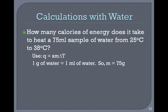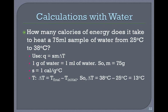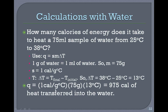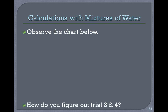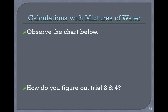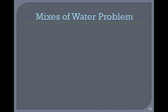How many calories of energy does it take to heat a 75 mL sample of water from 25°C to 38°C? Using Q-SMAT: one gram of water equals one milliliter, so we have 75 grams. S is one calorie per gram degree Celsius, from the chart. ΔT is final minus initial: 38 minus 25 equals 13. Plugging in: one calorie × 75 grams × 13°C = 975 calories of heat transferred.